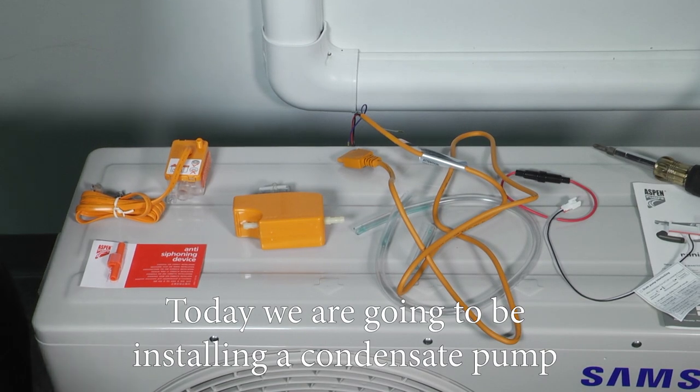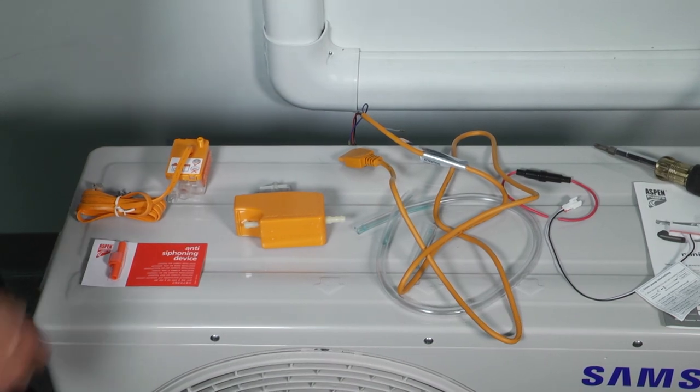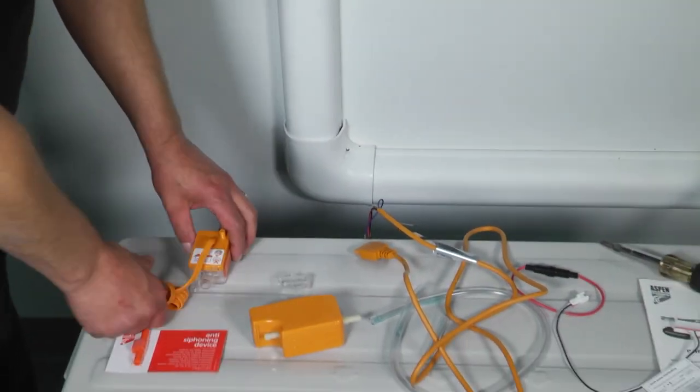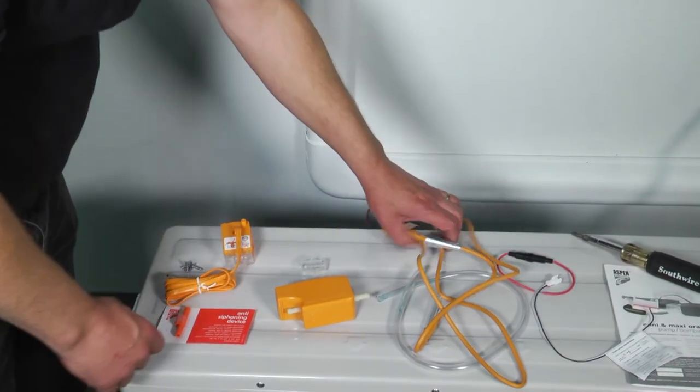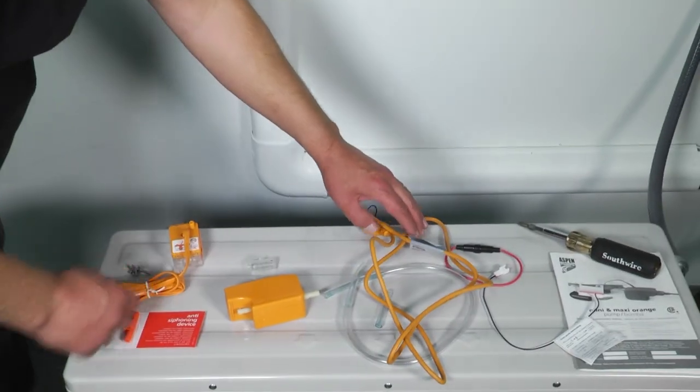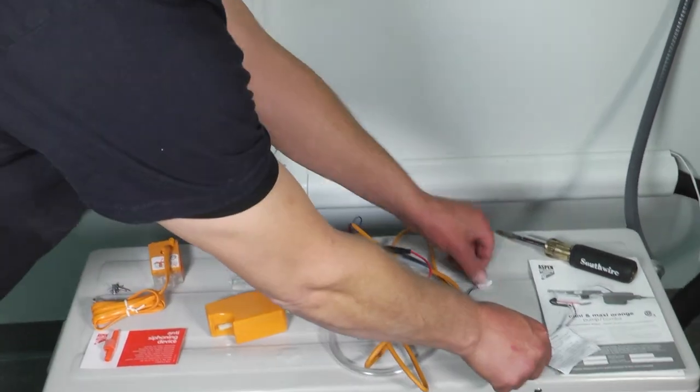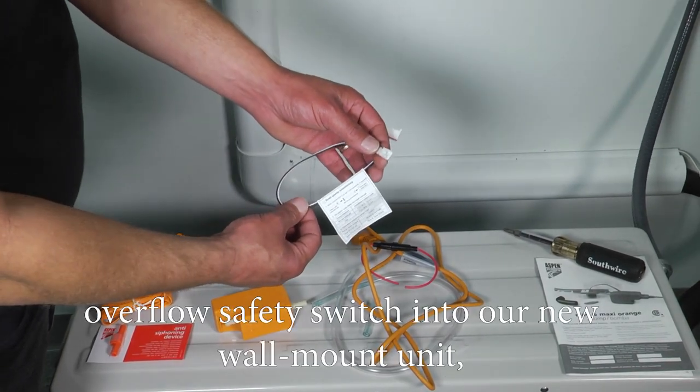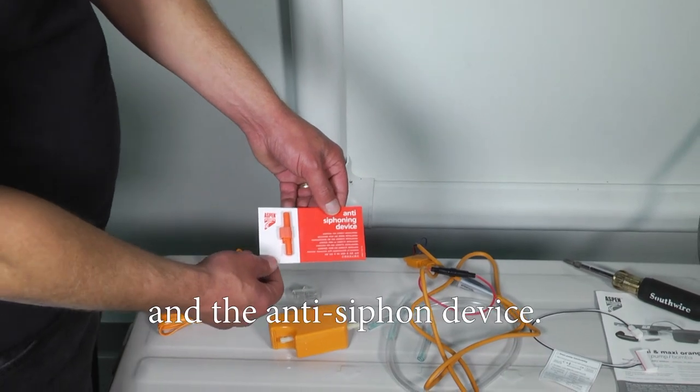Today we're going to be installing a condensate pump in one of our new wind-free wall mount units. Major components are going to be the pump body, the reservoir, the power cable, fusible link, and the harness that allows you to plug your overflow safety switch into our new wall mount unit, the anti-siphon device.